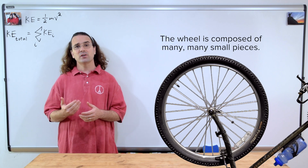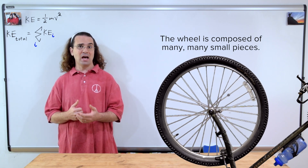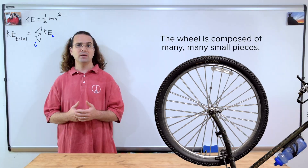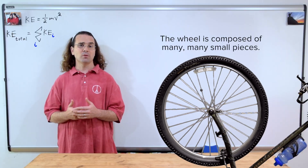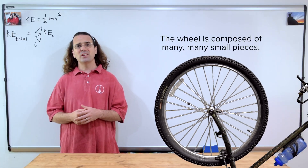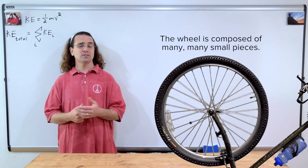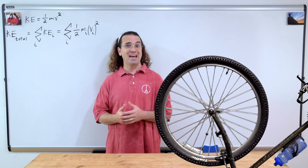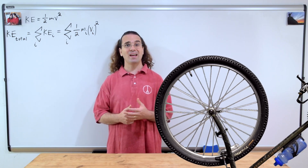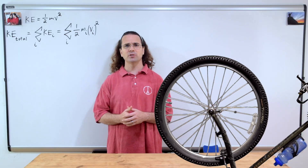The letter i represents that the number goes from 1 to i, the total number of small pieces which make up the bike wheel. Substituting in the equation for kinetic energy gives us the sum of one-half mass times velocity squared for every small piece which makes up the object.